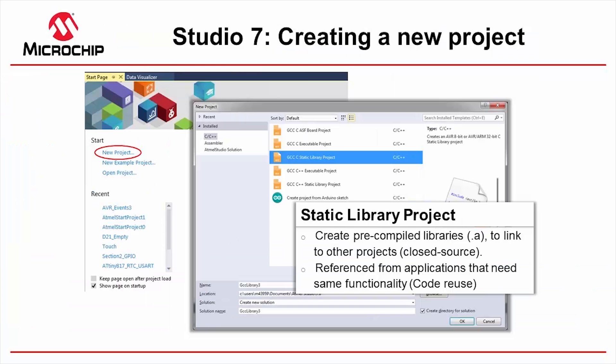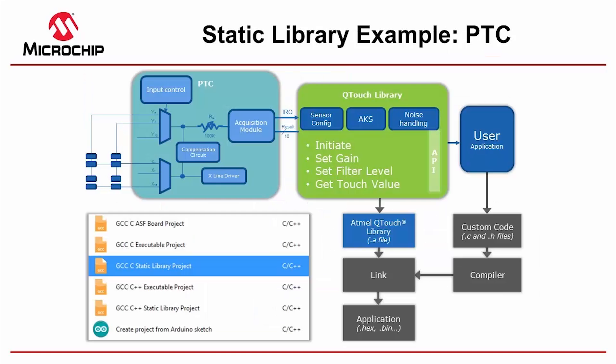A static library — you create pre-compiled libraries to link to other projects, and this tends to be to reuse the same functionality or to share a kind of core company IP across various products. For example, Atmel uses this static library for our peripheral touch controller, one of the more unique peripherals we have for touch applications with buttons, sliders, and wheels. The touch library itself configures sensors, adjacent key expression, noise handling, gain and filter levels, etc., and gets compiled as a static library project as a .a file and then linked into the project.